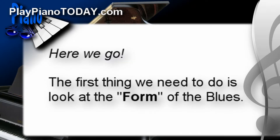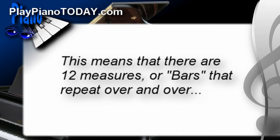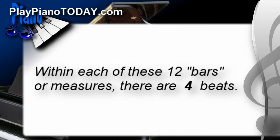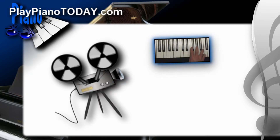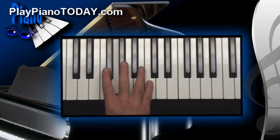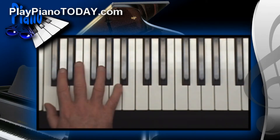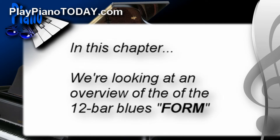Here we go. The first thing we need to do is look at the form of the blues. Maybe you've heard of the 12-bar blues. This means that there are 12 measures, or bars, that repeat over and over. Within each of these 12 bars, or measures, there's four beats. In the upcoming blues chapters, there's lots of video zoomed in up close at the keyboard level, and you can see the details of what each hand and finger are doing. But at this point, in the first chapter, we're not quite ready yet to look at specific chords or notes. Instead, we're looking at an overview of the 12-bar blues form.